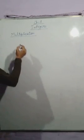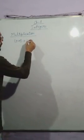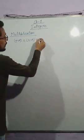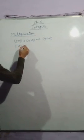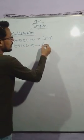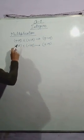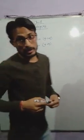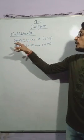If both the integers are positive, positive multiplied by positive gives a positive integer. If both the integers are negative, the result is also a positive integer. This means if both the integers are of the same sign, the result is positive.